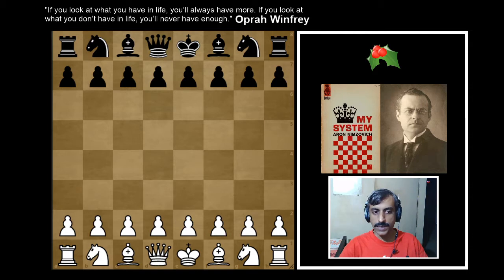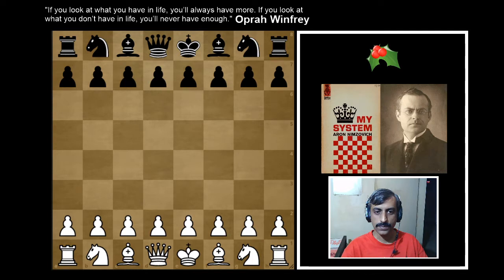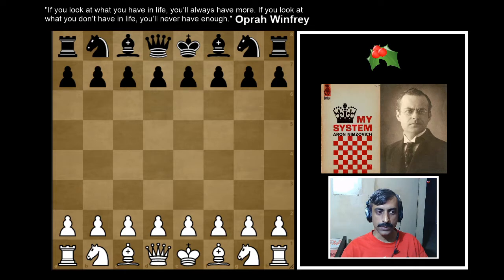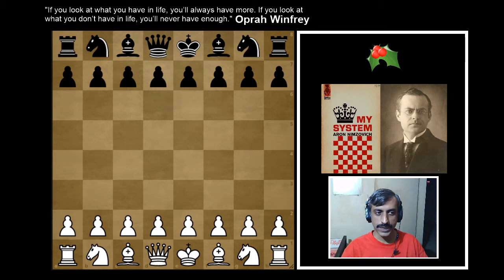A brief review of the last part, where we started and then finished chapter number 8, Discovered Check, after discussing the pin and discovered check, the seesaw and double check with illustrations given by Nimzovich. So now moving further into the book, we begin chapter 9, The Pawn Chain, which is the last chapter of the first part of the book, The Elements, and is a relatively longer chapter. Nimzovich begins the discussion under the following headings: general remarks and definitions, the base of the pawn chain, and the conception of the two distinct theaters of war.